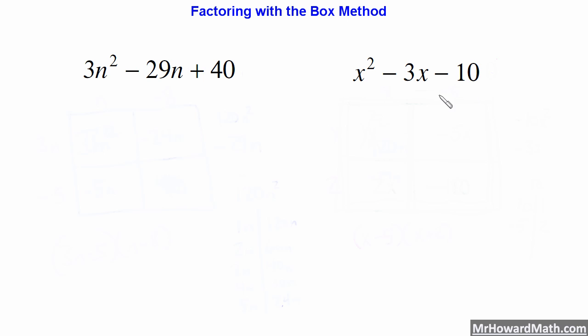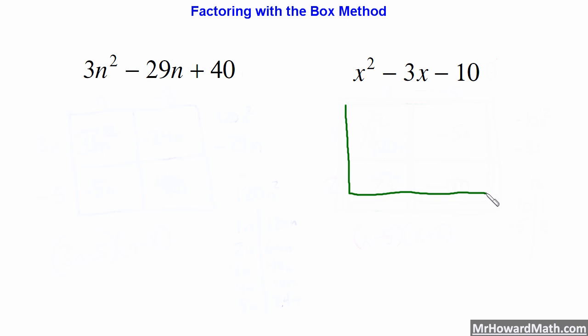On a very simple trinomial like this one, mental factoring would certainly work and probably be a more appropriate method. But again, the advantage of the box method is that it will work for anything. In this first video we'll just cover some basic examples. I will put up some additional videos for my students so you can see how to work with more complicated examples. The first thing we want to do is draw a box — hence the name box method.